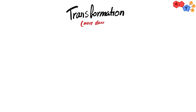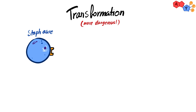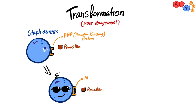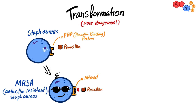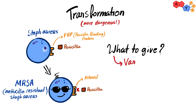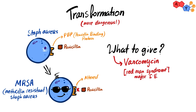Staph aureus can also transform into something more dangerous. It can alter its penicillin-binding protein present on its cell wall, becoming MRSA — methicillin-resistant staph aureus. Keep this in mind for treatment, because we specifically use vancomycin for MRSA. A high-yield side note: vancomycin can cause red man syndrome as a side effect, which is frequently asked about in board examinations.